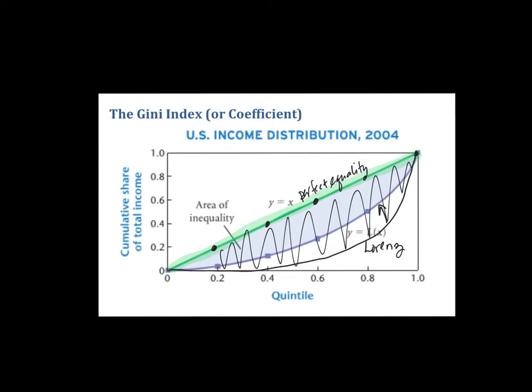That's essentially the idea behind the Gini index: we want to measure the area of inequality and compare it to the area of perfect equality. Any index compares two things — like the consumer price index compares prices now to prices in the past. So a Gini index is a comparison of the area of inequality to the area of perfect equality.